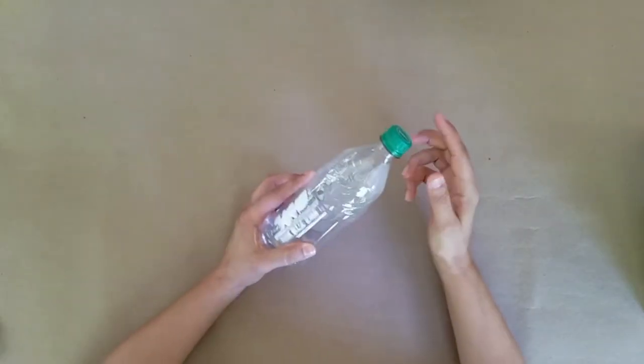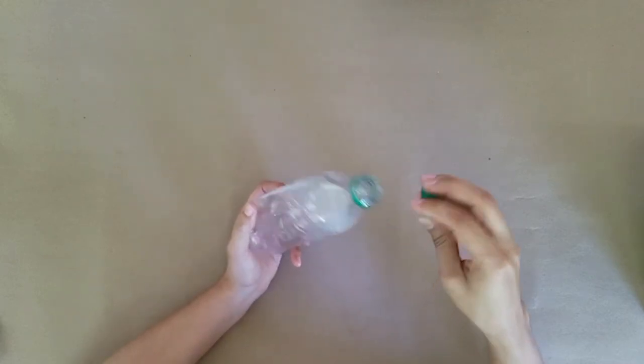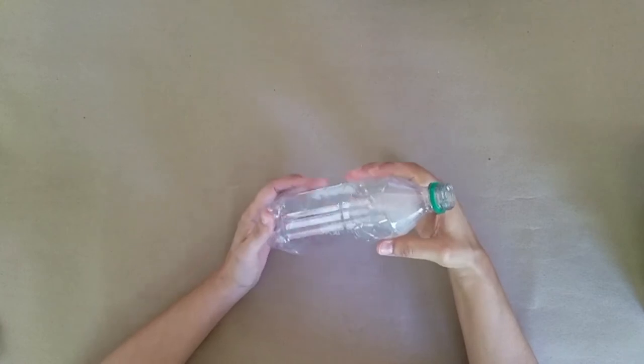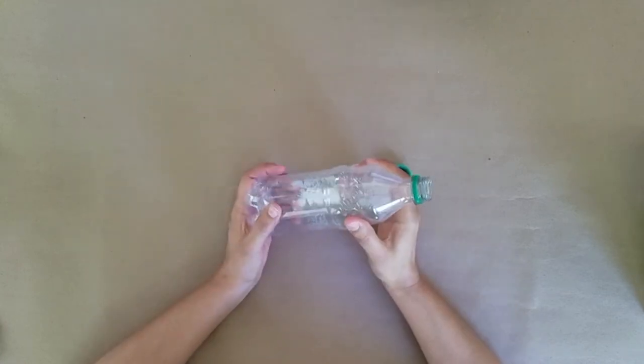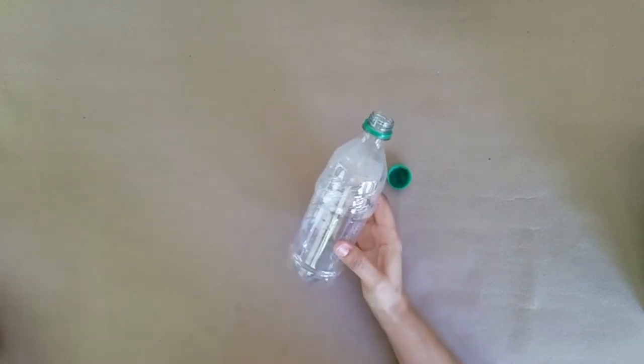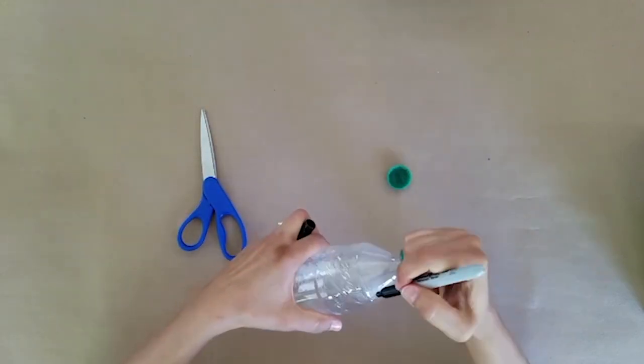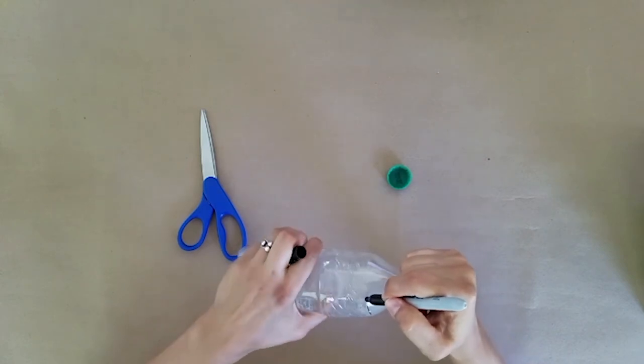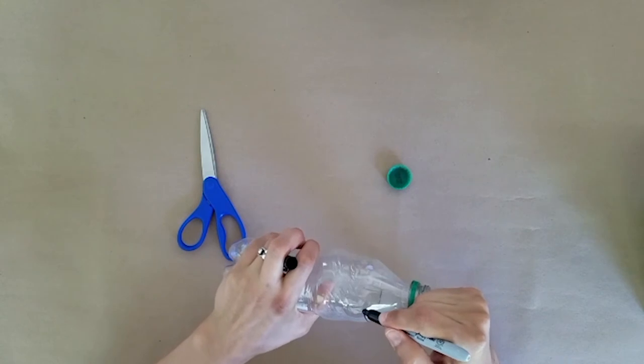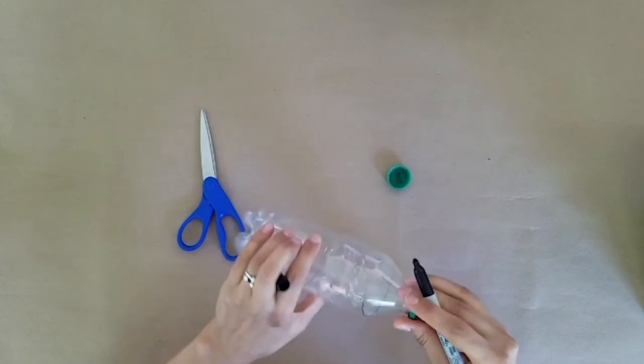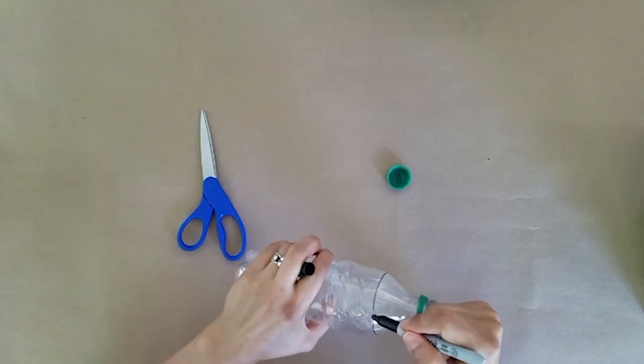So step one will be to wash out your plastic bottle and dry it so you have a nice clean material to work with. You'll also want to remove any of the packaging on your plastic water bottle. The second step will be to take your marker and draw a line around the top of your bottle. You'll use this as a guide to cut out the top portion of your bottle.